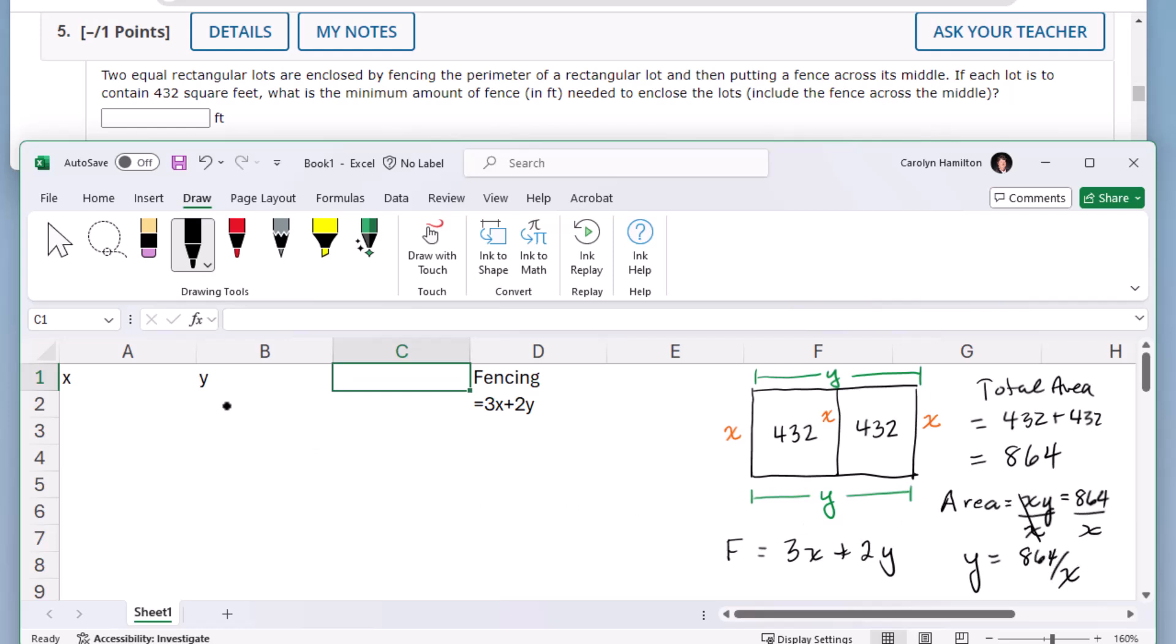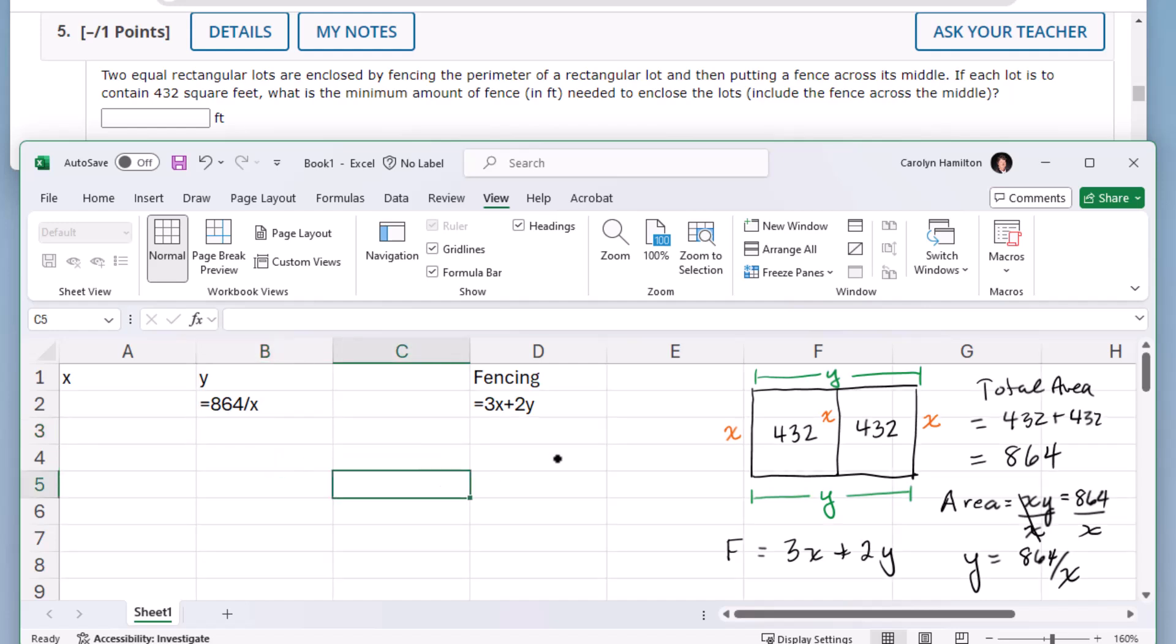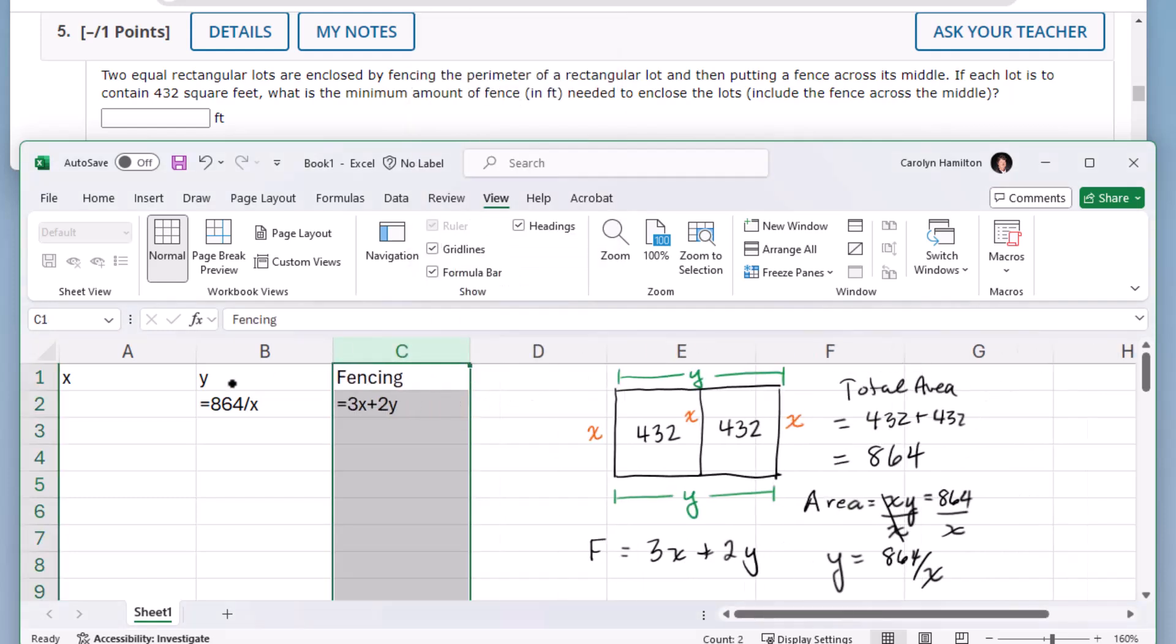So now if I start with my x, then I could have y be equal to 864 divided by that x. Let me put my grid lines back on. There we go. And actually I think that's all we need, so we can get rid of this. So if I start with some number x, like, I don't know, 10,